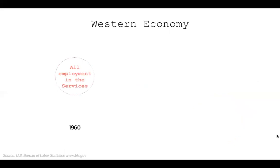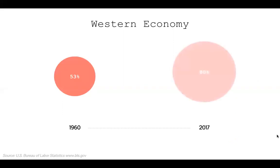If we were to rewind to 1960 and look at the Western economy — Western Europe, the Americas, Australia, New Zealand, Canada — about 53% of the Western economy was wrapped up in the service economy. Fast forward to 2017, and that 53% has grown dramatically to 80% of all employment being in services. During that same time, there's been massive population growth, so the combination of the growing percentage and the growing size of the Western economy accounts for far more people doing services than in 1960.